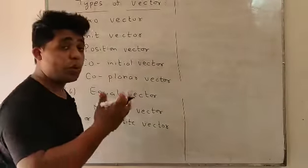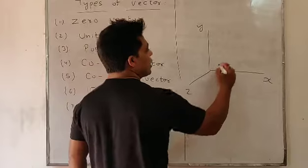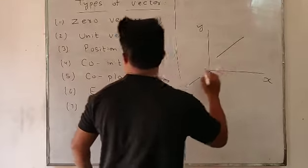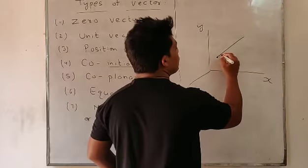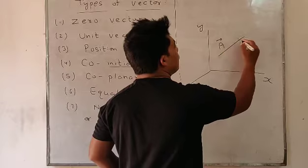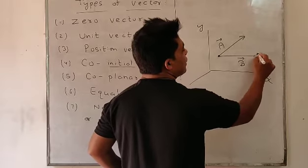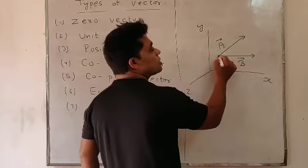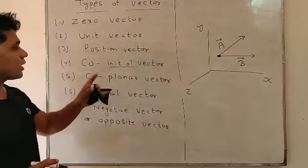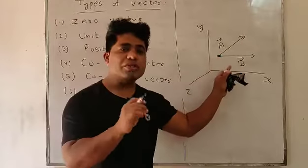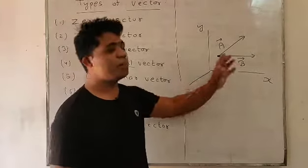Our next type is co-initial vector. In the 3D plane x-y-z, those vector quantities that have the same initial point are said to be co-initial vectors. For example, vector A starts from the origin and vector B also starts from the same origin point — since both have the same initial point, vectors A and B are said to be co-initial vectors.